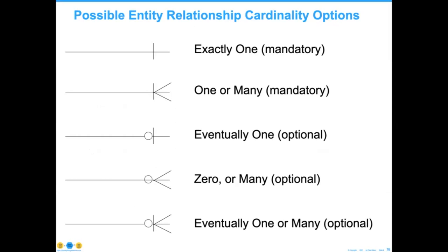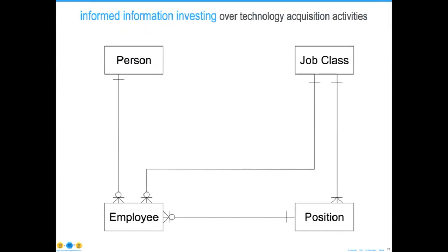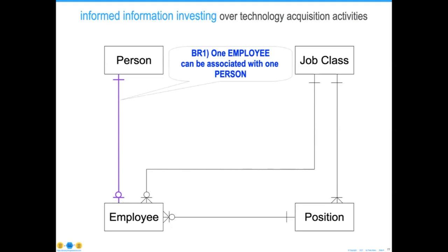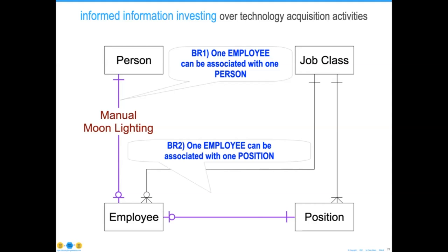I like to say we should do informed information investing over technology acquisition activities. Here's a data model I was faced with when working for the Defense Department — it had a relationship between two natural entities: a person and an employee. It said one employee can be associated with one person, which means if you're going to moonlight — have a second job working for that organization — this system cannot handle that requirement without manual processing. Similarly, one employee could be associated with only one position, meaning job sharing also had to be done manually.